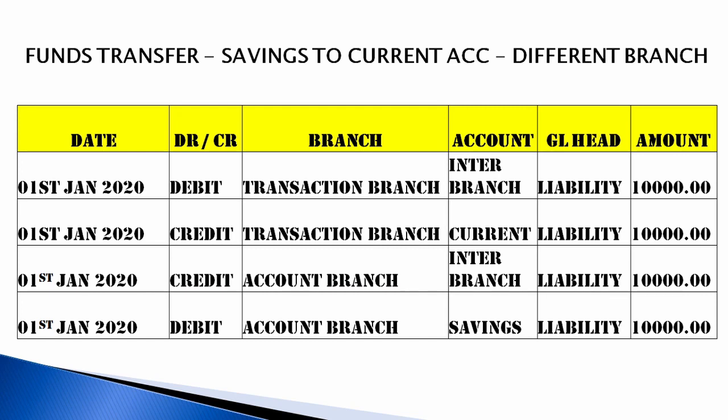For fund transfer from savings to current account at a different branch, the savings account is debited and the current account is credited. Both are liabilities, but inter-branch transactions will occur — one entry for the transaction branch and another for the account-holding branch.